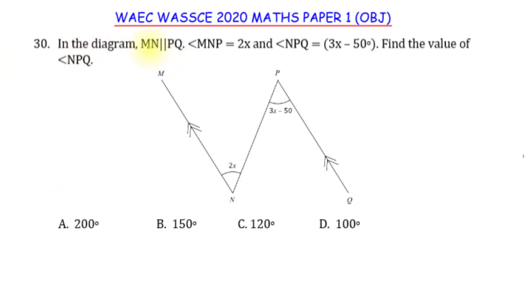In the diagram, line MN, this is MN, is parallel to line PQ, this is PQ. And that parallel property of the two is being indicated by these double arrows that are shown on the two lines. Now, I'm told that angle MNP, so this angle here is 2X, and angle NPQ, this angle here is 3X minus 50 degrees. You have to find the value of NPQ.